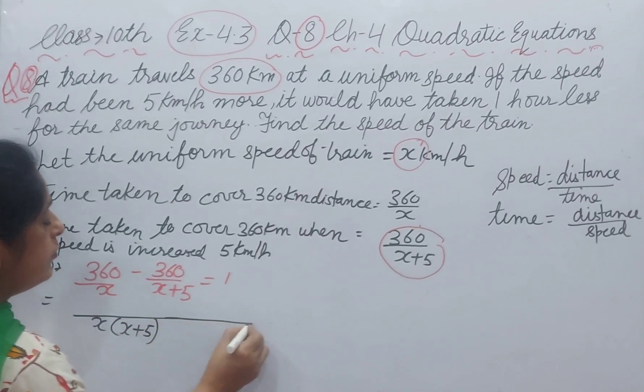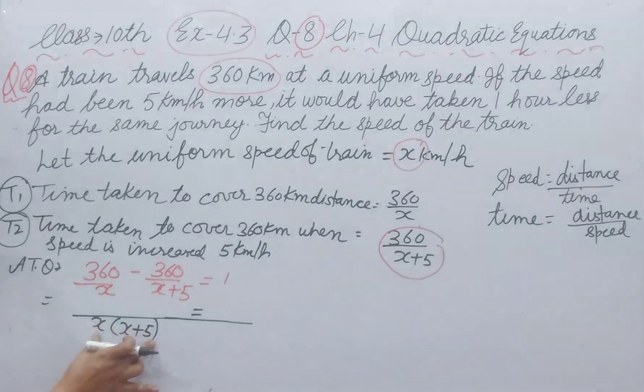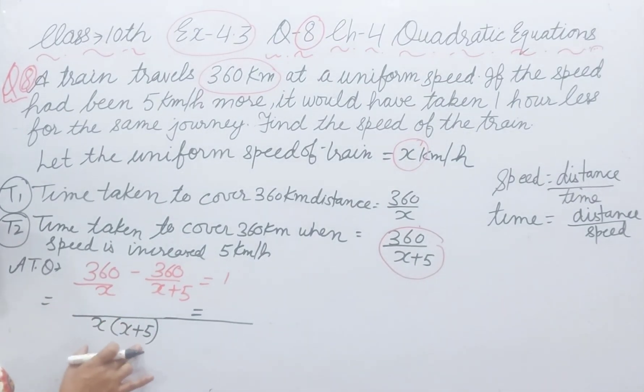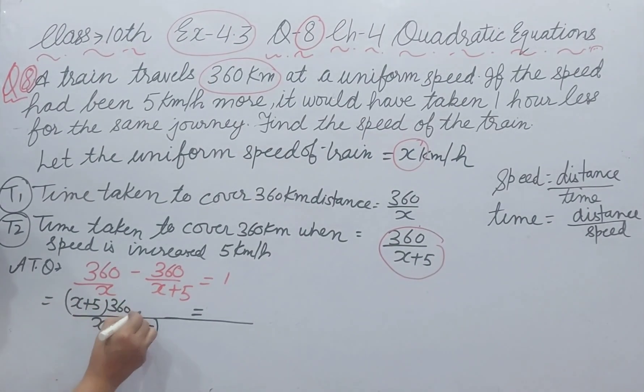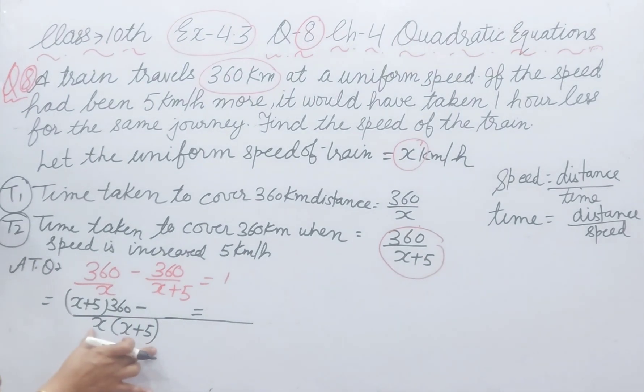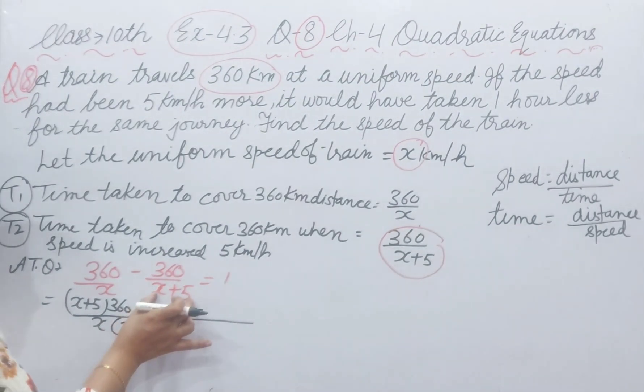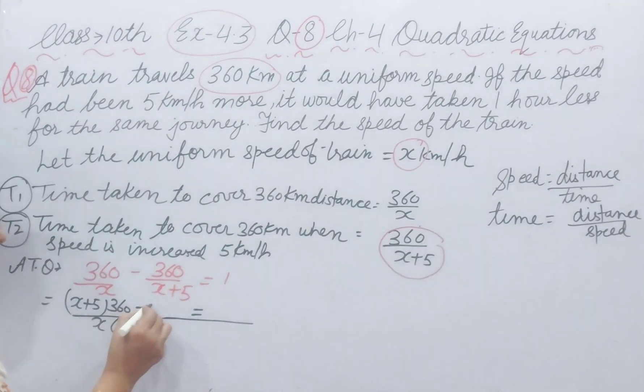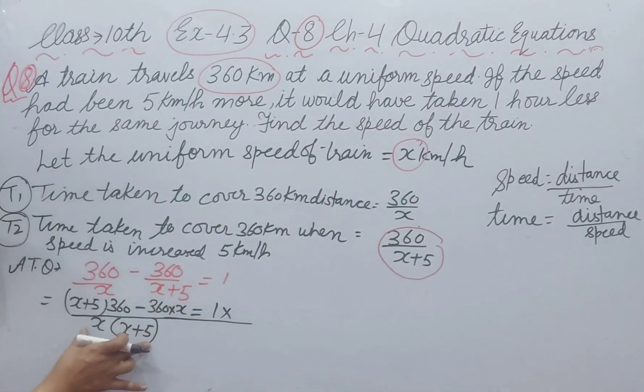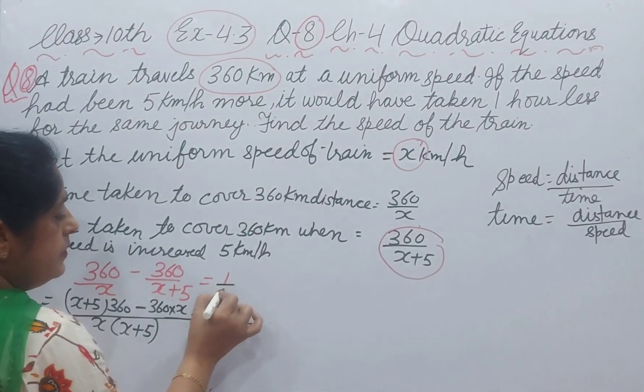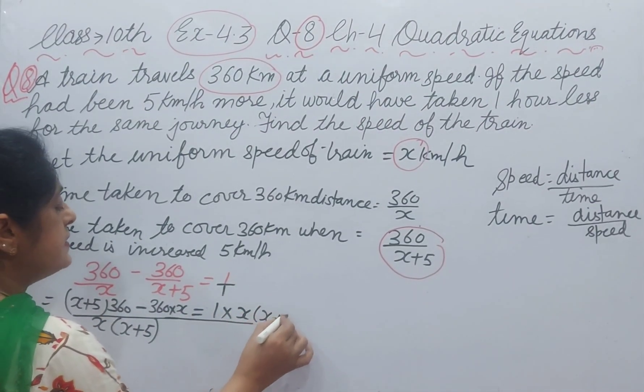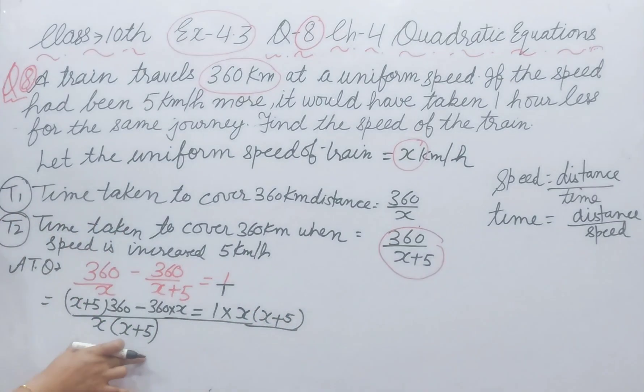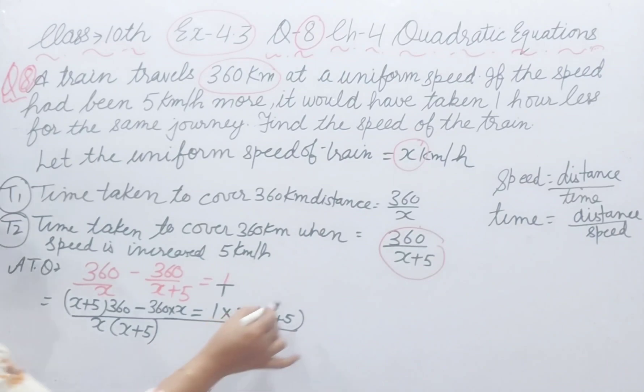If you take full LCM, this LCM divided by x, x plus 5 will be left, and multiply 360 minus sign. This LCM divided by this denominator, x will be left, 360 into x. And 1 multiply this whole, because 1 you can write as 1 upon 1, x times x plus 5. If we have taken full LCM, then this LCM will be removed. Now, I am solving here.